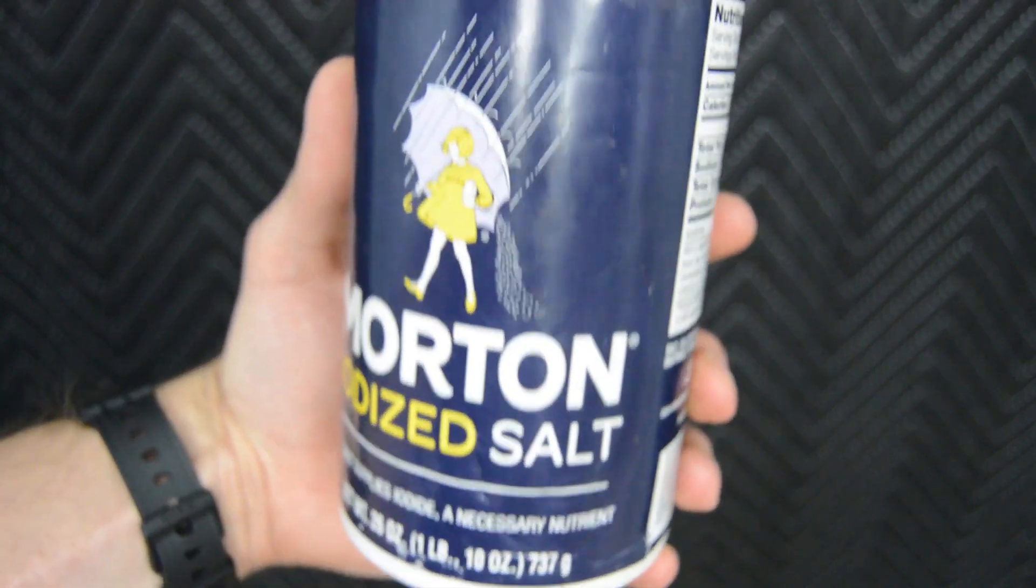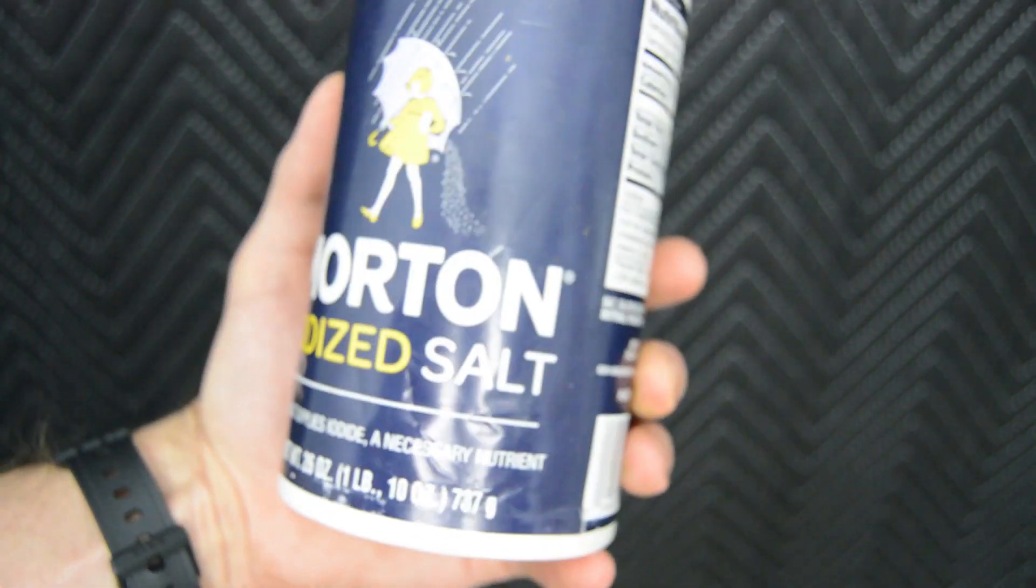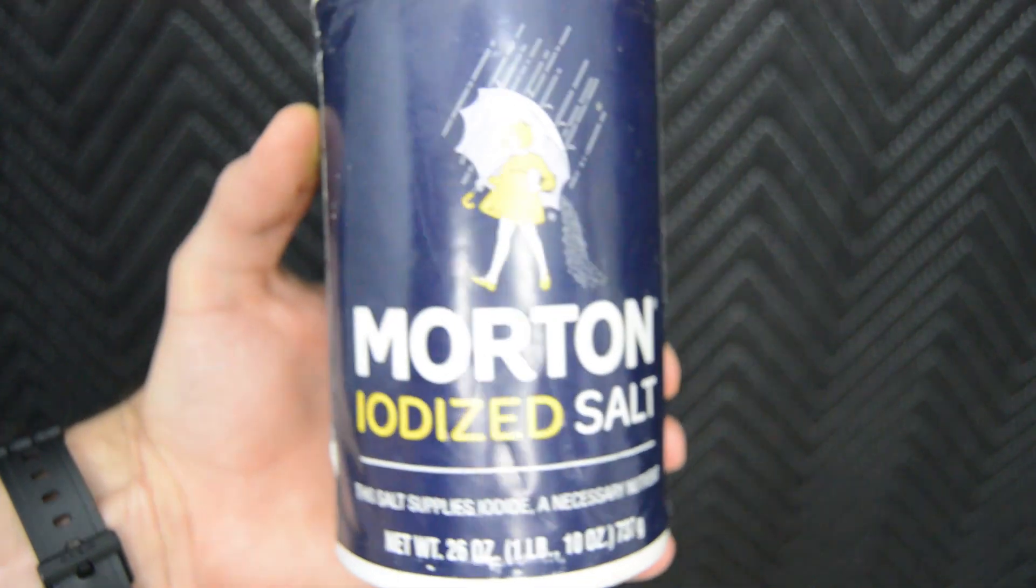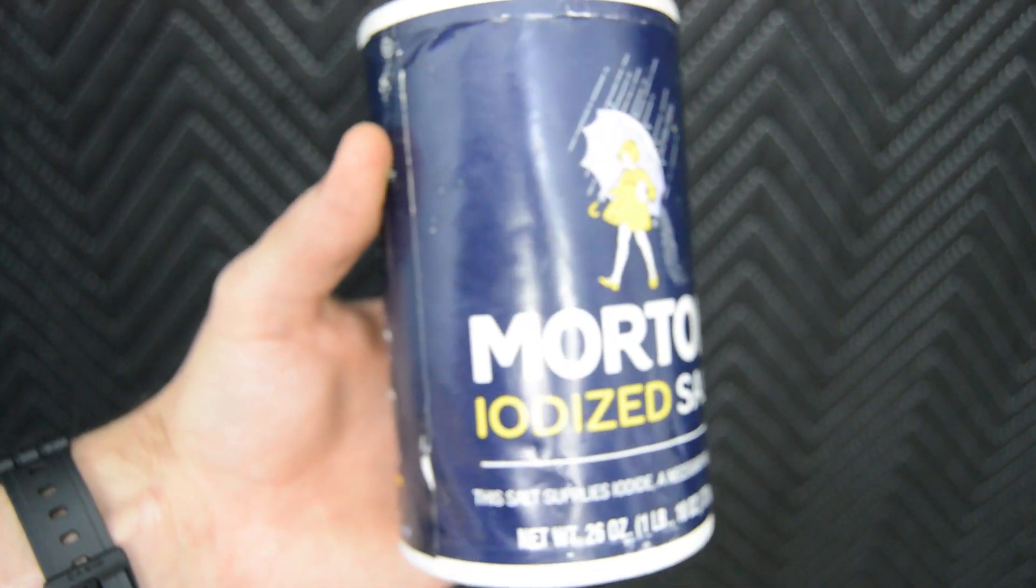Table salt. This will provide chlorides which will help corrode and break down the copper electrodes. Do not use sea salt because it contains many other minerals besides sodium.